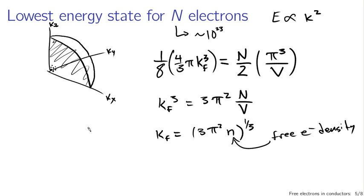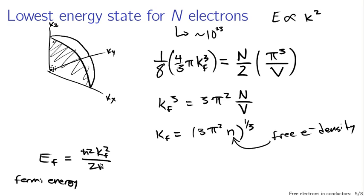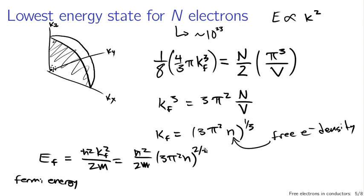Knowing kf — the Fermi k — we can calculate Ef, the Fermi energy, named for Enrico Fermi. Ef = h-bar squared kf squared / 2m, which substituting kf gives Ef = (h-bar squared / 2m)(3 pi squared n)^(2/3). So the Fermi energy is a property of the density of free electrons, Planck's constant, and the mass of the particles. This tells us the energy of the highest-energy electrons in a material, given these free-electron assumptions.